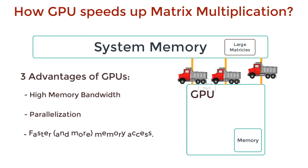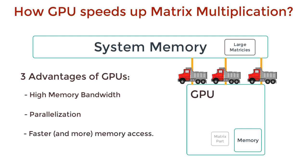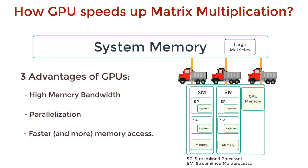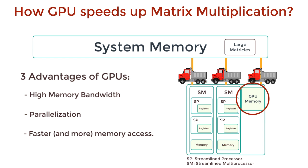The third advantage of GPUs is fast memory access. GPUs have small registers and caches, but there are a bunch of them, so we can store a lot of data and access it pretty fast. A GPU has a few streamlined multi-processors, which constitute the processing part of the GPU. It has a global memory shared by these multi-processors and some local memory specific to each multi-processor that cannot be shared with other SMs.